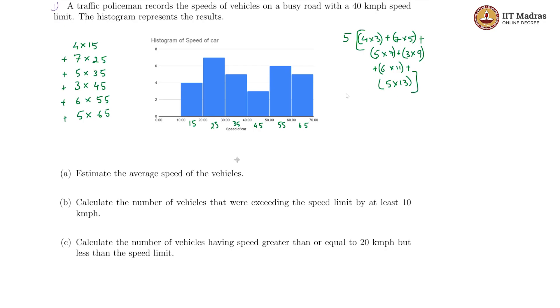We have slightly more manageable numbers. We will get 5 times 4 into 3 is 12 plus 7 into 5 is 35, 5 into 7 is also 35 plus 3 into 9 is 27 plus 6 into 11 is 66 plus 5 into 13 is 65.